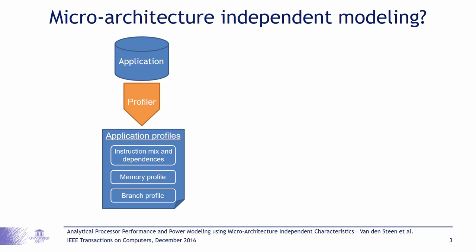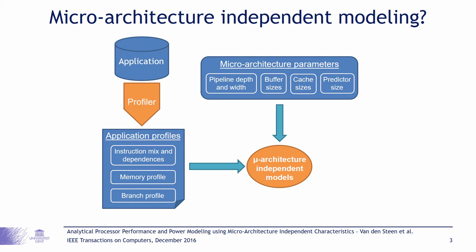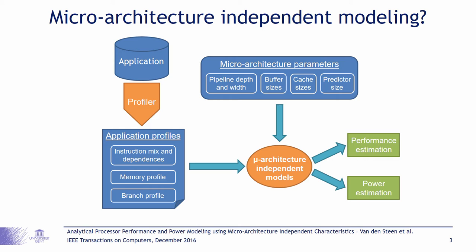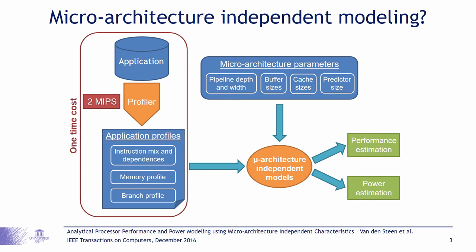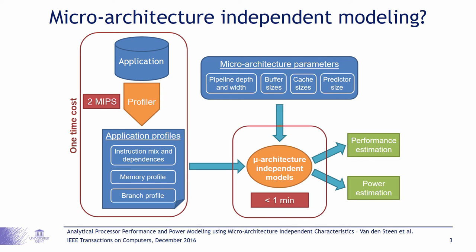For more detail on how these profiles look, I would refer you to the paper. The analyzer is a collection of mathematical models which will use these profiles together with parameters of the microarchitecture. It will generate performance and power numbers for a fixed application and processor architecture. The biggest advantage is that the profiler needs to be run only once per application and typically achieves a processing speed of 2 million instructions per second. The analysis phase can then be rerun for every processor configuration, but usually takes less than a minute, making it possible to evaluate large design spaces in very little time.